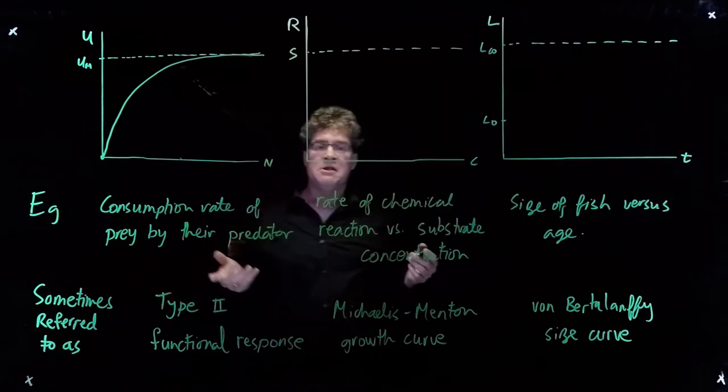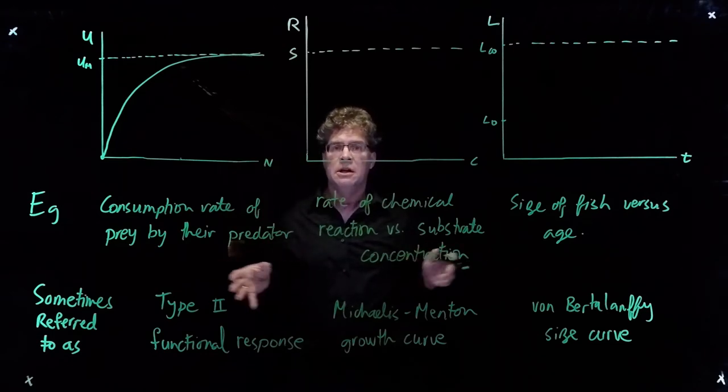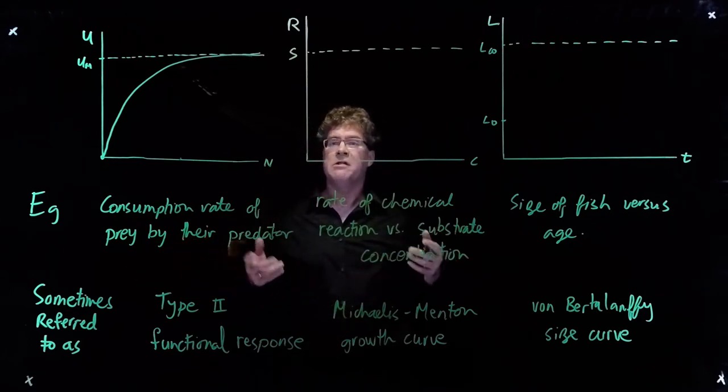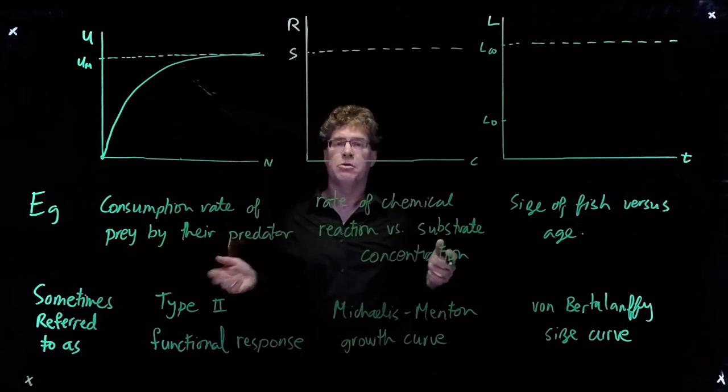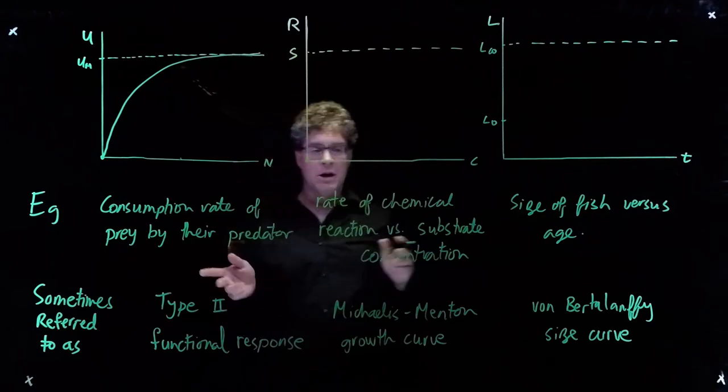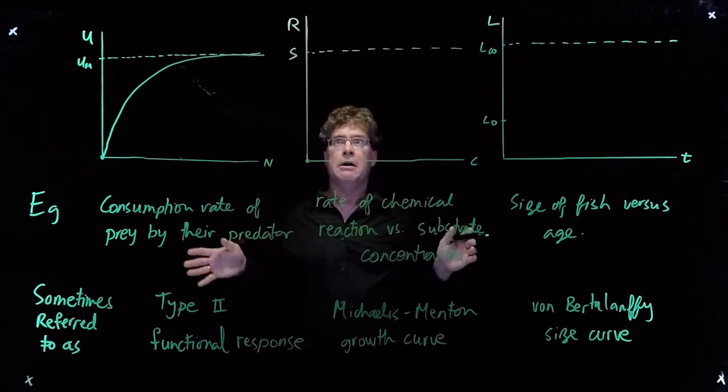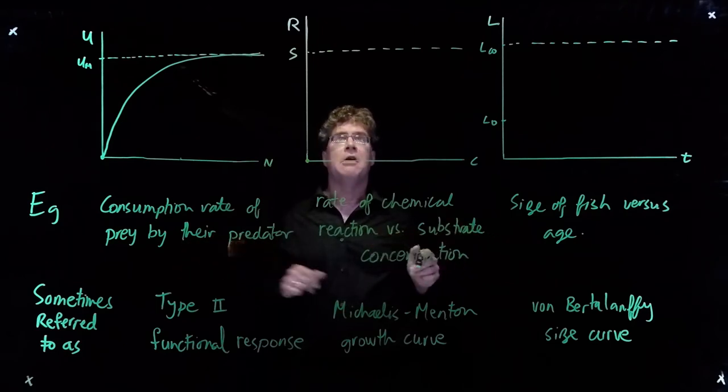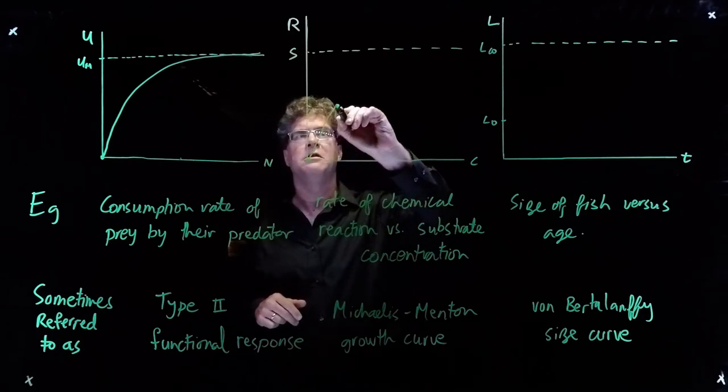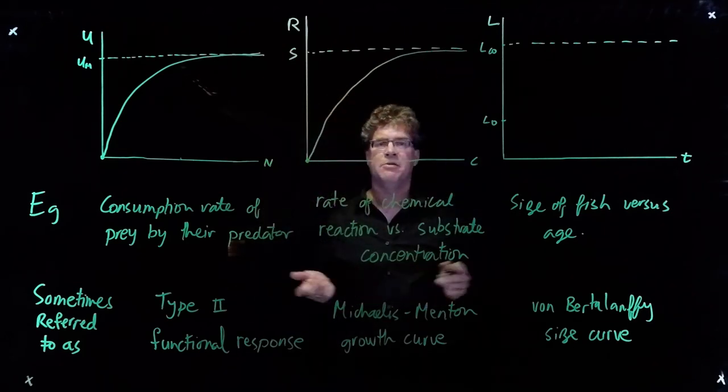If I were interested in the rate of a chemical reaction as a function of the substrate concentration, a substrate is an element that goes into the reaction, I would often use what's called a Michaelis-Menten growth curve. When there's no substrate, there's no reaction. And when substrate concentrations are very high, the reaction goes to a very high level but then levels off. The shape of the curve is the same, it grows and then gradually levels off as the substrate concentration becomes very high.